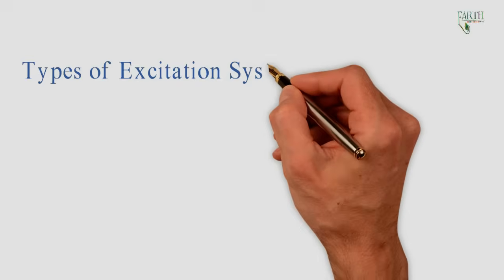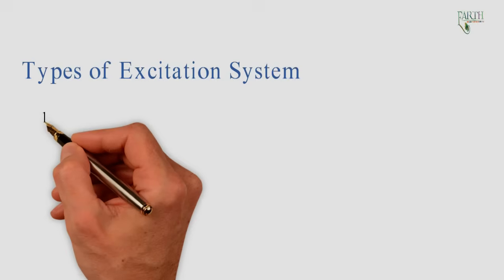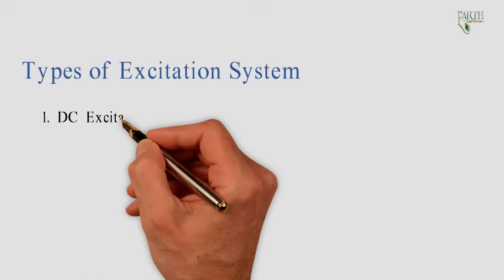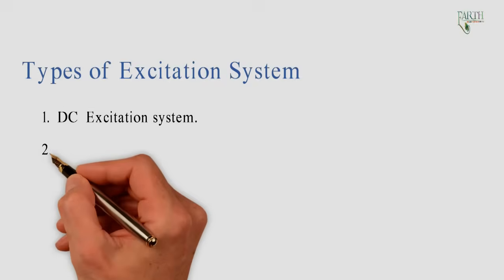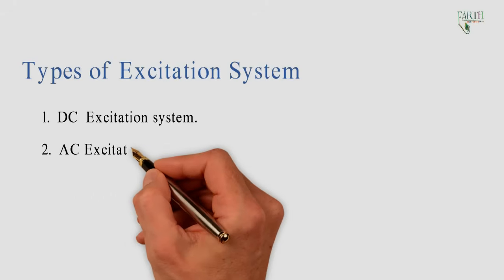Types of excitation system: 1. DC excitation system, 2. AC excitation system, 3. Static excitation system.